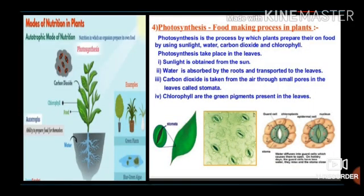Autotrophic Mode of Nutrition in Plants: Plants need food for their growth and can produce their own food with the help of sunlight and chlorophyll. They make food in their leaves using water and nutrients from the soil and carbon dioxide from the air. This process is called photosynthesis — a process by which plants prepare their own food using sunlight, water, carbon dioxide, and chlorophyll.